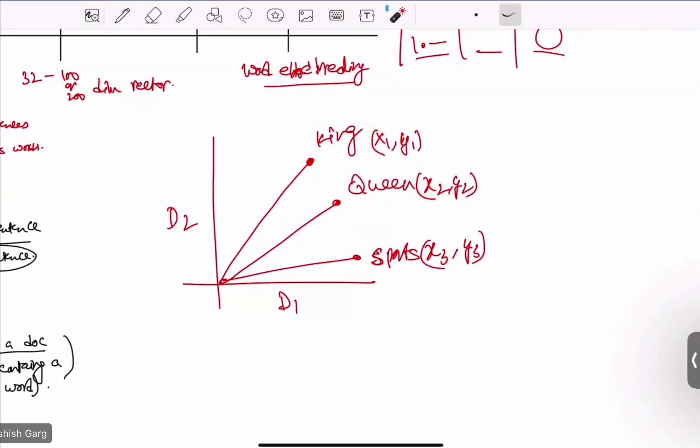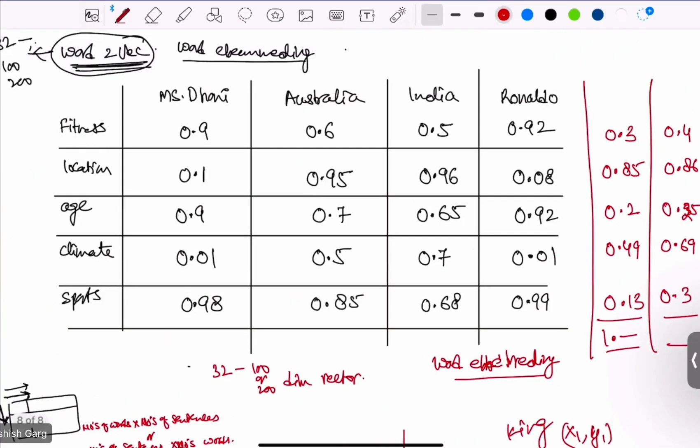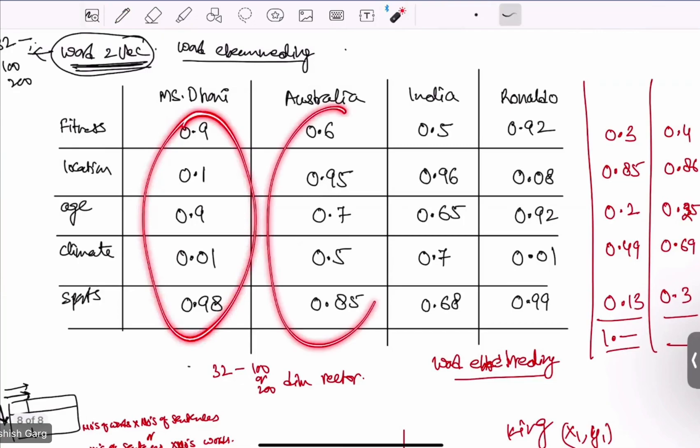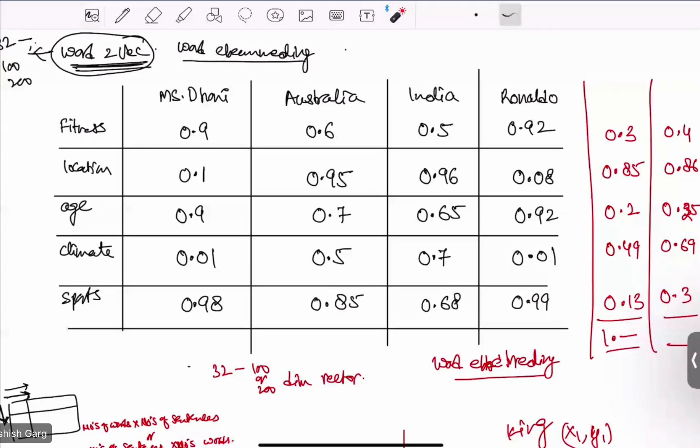This is how our word2vec model is finding. These features of vector, which I am talking about, these features of a vector are built using word embedding technique, word embedding technique.